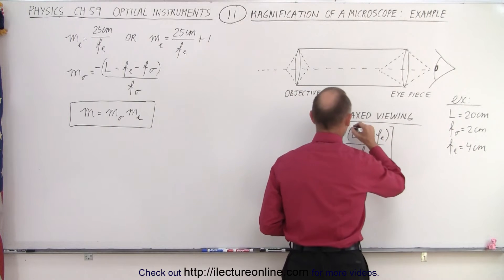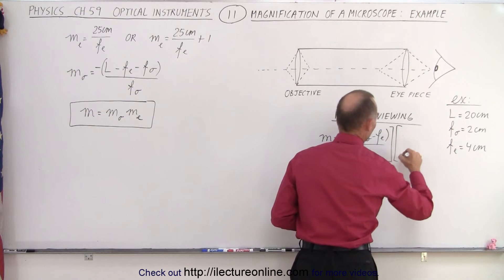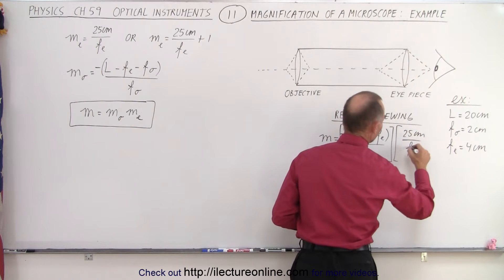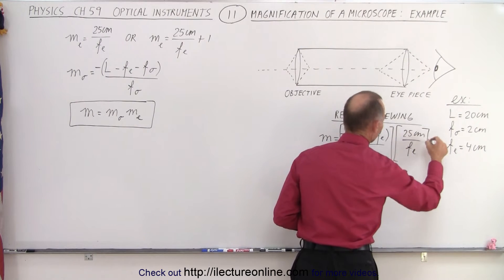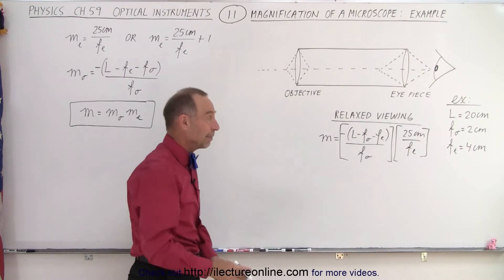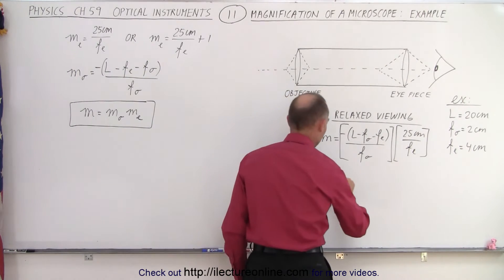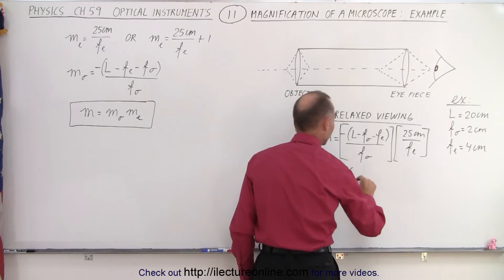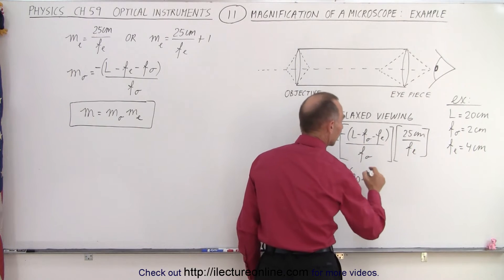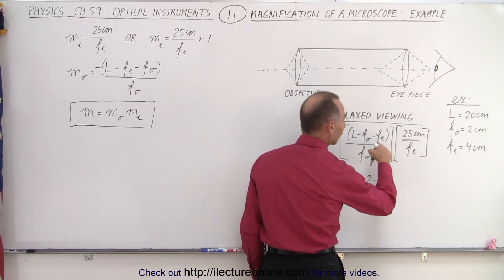We multiply that times 25 centimeters divided by the focal length of the eyepiece. We have some numbers as an example. This is equal to: minus 20 minus the focal length of the objective, which is 2, minus the focal length of the eyepiece, which is 4.